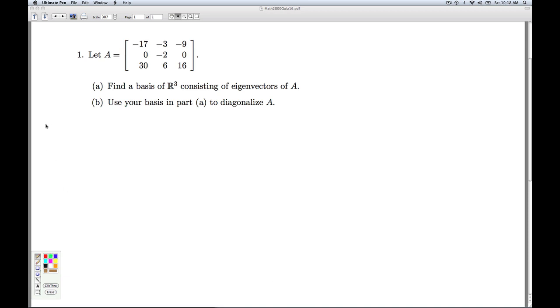So now we look at lambda is negative two. So I'm looking at solving A minus lambda I, x is zero. Lambda is negative two, so it's really A plus two I, x is zero. I'm going to let x be the unknown vector. And I look at the augmented matrix I get from this system. I'm going to basically be adding two to each of these values. So negative fifteen, negative three, negative nine,